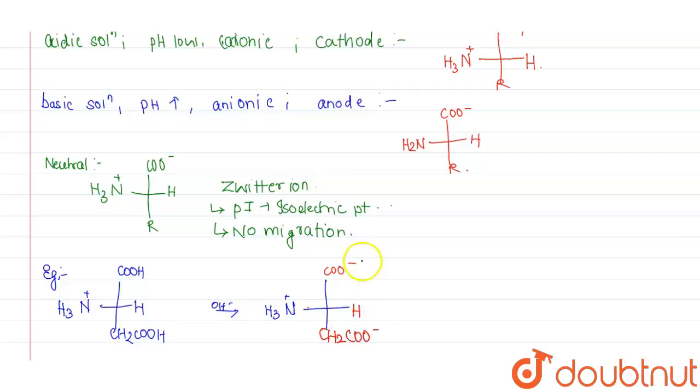As we can see now, this molecule, this amino acid is totally negatively charged. Now, as this is totally negatively charged, it will move towards anode.